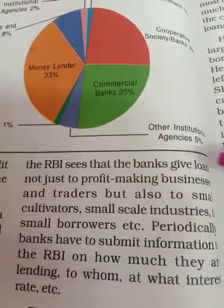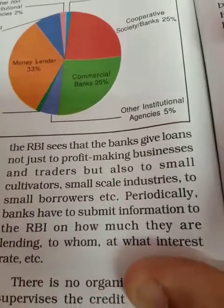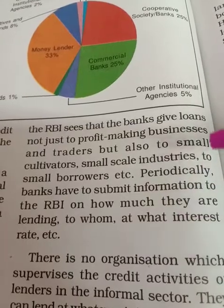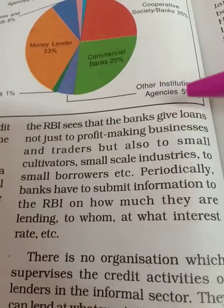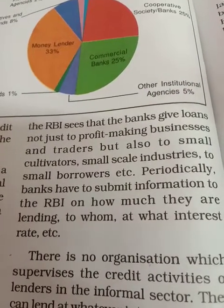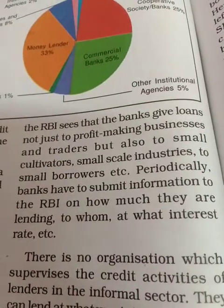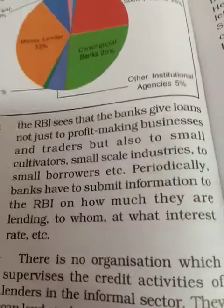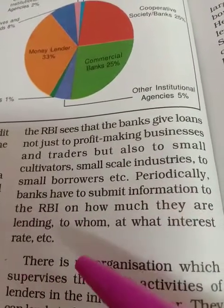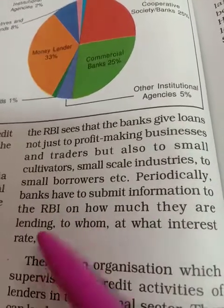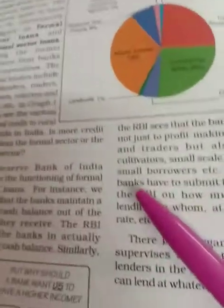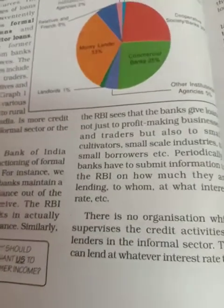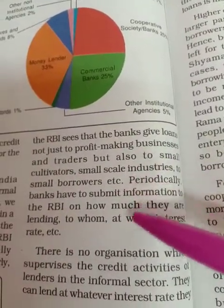The RBI also ensures that banks give loans not just to profit-making businessmen and traders but also to small cultivators, small-scale industries, and small borrowers. Periodically, banks have to submit information to the RBI on how much they are lending, to whom, and at what interest rate. The RBI sometimes fixes a quota — a percentage of deposits that should be given to small farmers or small businessmen.